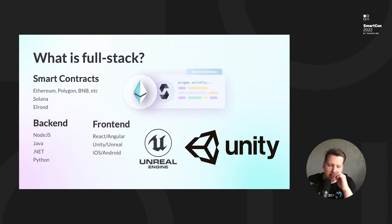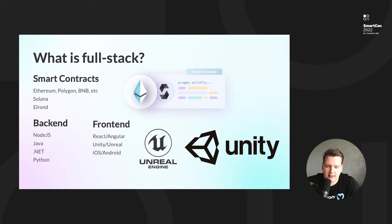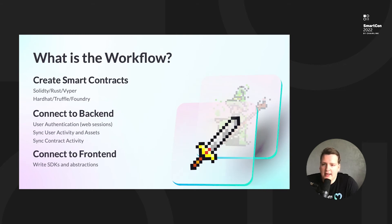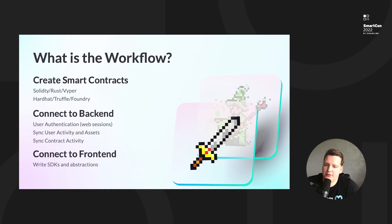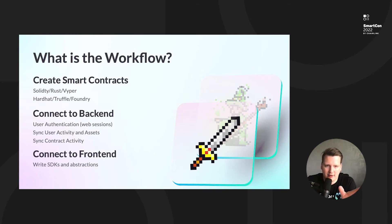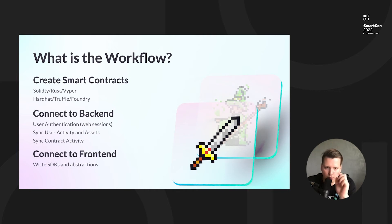When thinking about immersive metaverse experiences, they'll probably be built using Unity and Unreal — game engines specifically. The workflow starts with creating smart contracts using Solidity, Rust, or Vyper, and deploying and testing them with tools like Hardhat, Truffle, or Foundry. Then you connect to the backend. If you're starting to build a game, the first thing you have to do is authenticate the user — connecting a wallet alone is not authentication; it can be fully faked.